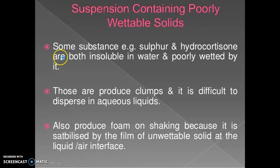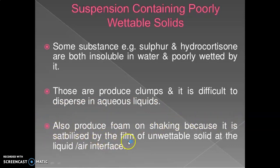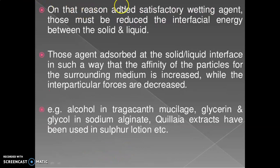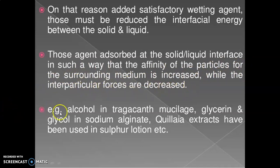Suspension containing poorly wettable solids: some substances, for example sulfur and hydrocortisone, are both insoluble in water and poorly wetted by it. These form clumps and are difficult to disperse in aqueous liquids; they also produce foam on shaking because it is stabilized by a film of unwettable solid at the liquid-air interface. For this reason, a satisfactory wetting agent must be added to reduce the interfacial energy between the solid and liquid. Such agents adsorb at the solid-liquid interface, increasing the affinity of particles for the surrounding medium while decreasing interparticular forces. Examples include alcohol in Trabacan mucilage, glycerine, glycol, sodium alginate, and quillaia extract used in sulfur lotion.